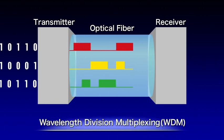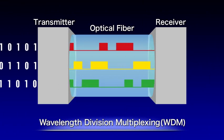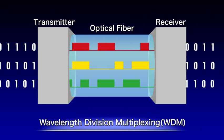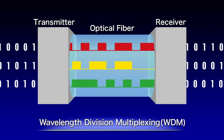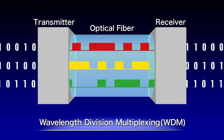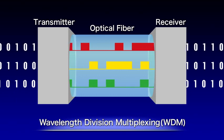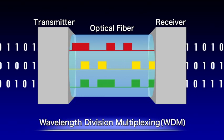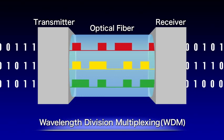Wavelength division multiplexing, or WDM, increases transmission capacity by performing time division multiplexing on multiple wavelengths. WDM is the basic technology supporting today's optical communication network.